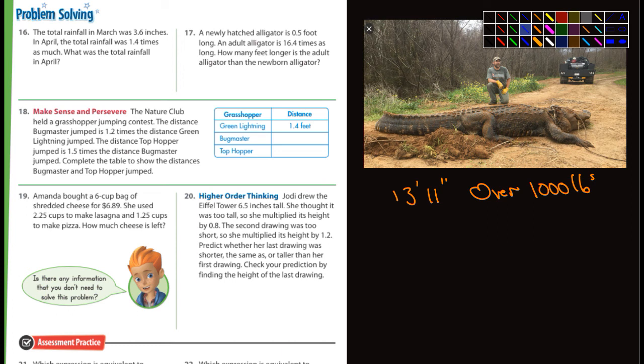Let's look at this here. It says the total rainfall in March was 3.6 inches. In April it was 1.4 times as much. What was the total rainfall? Well, what's 3.6 times 1.4? You should be able to solve that.